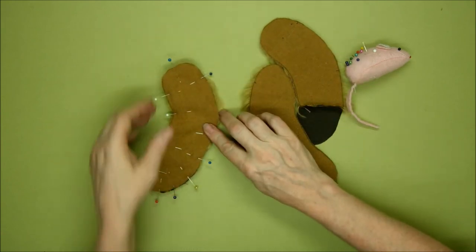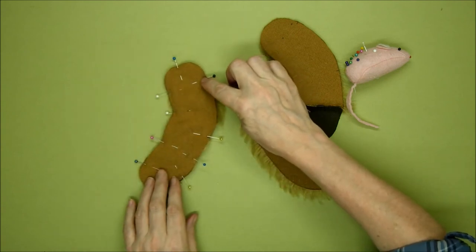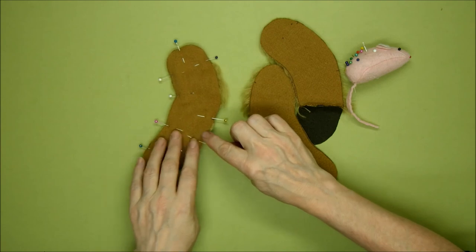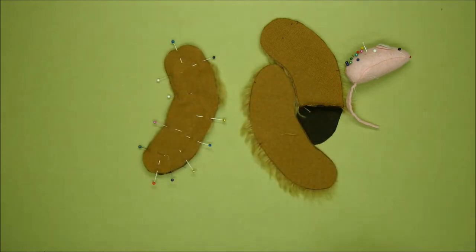So repeat on the other arm, leave this open here for stuffing and jointing, and go all the way around up to that open bit there. Lovely.